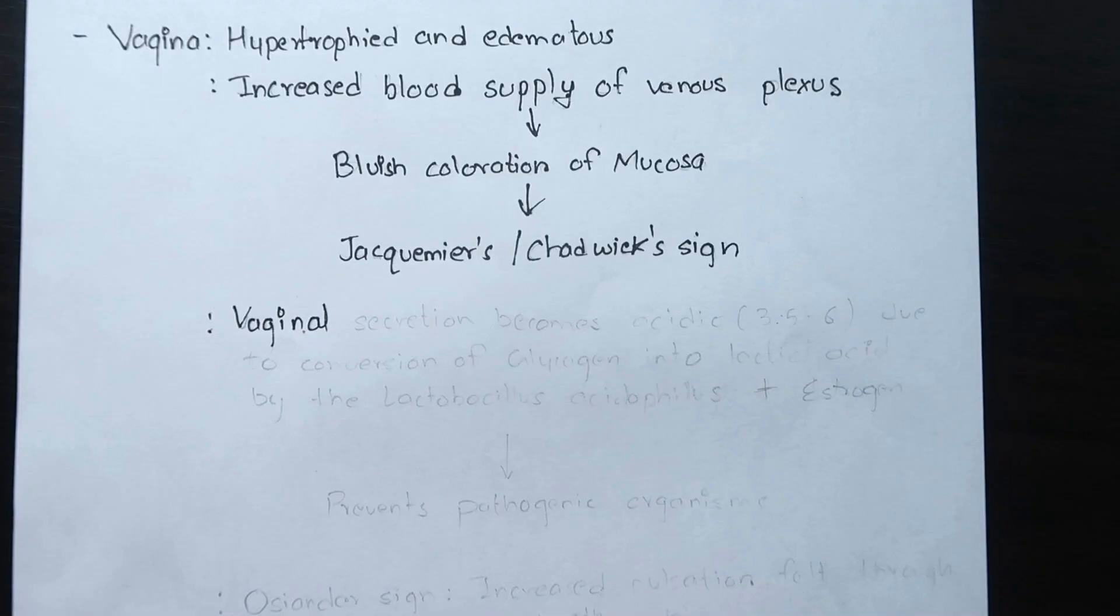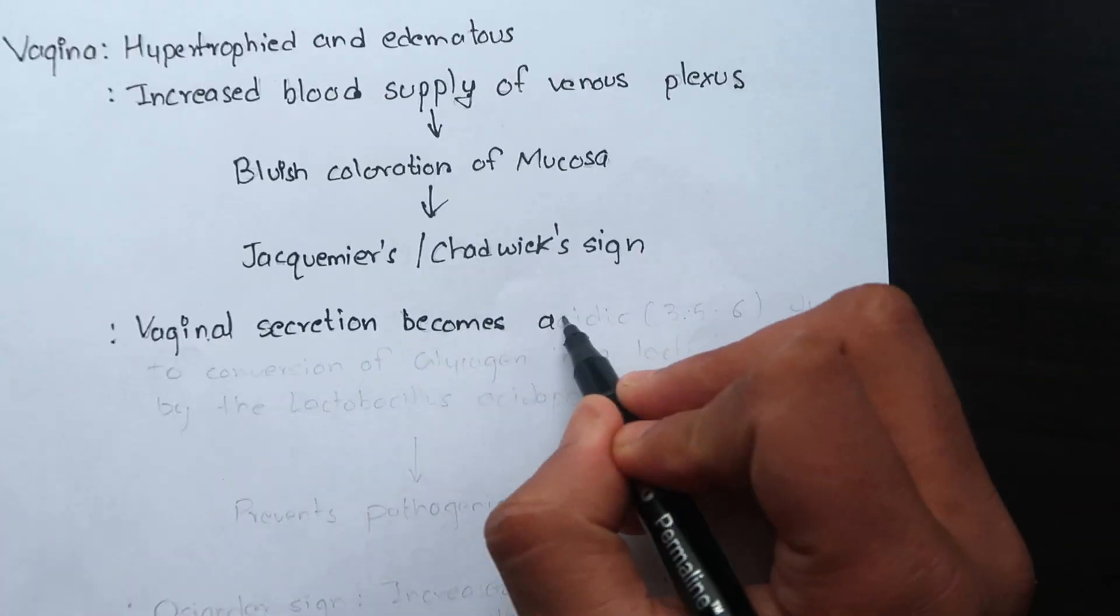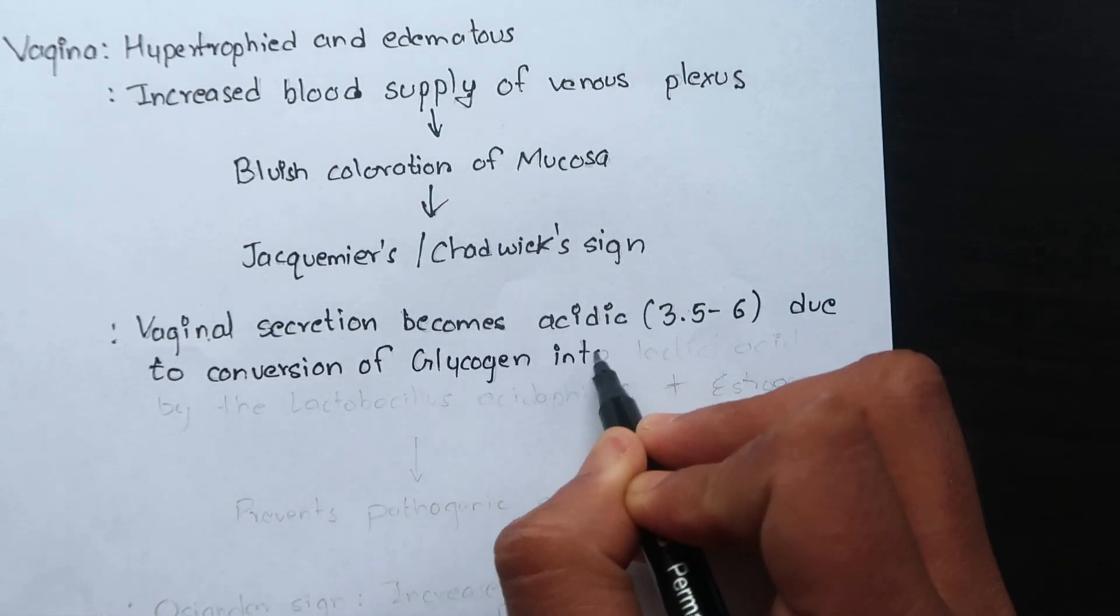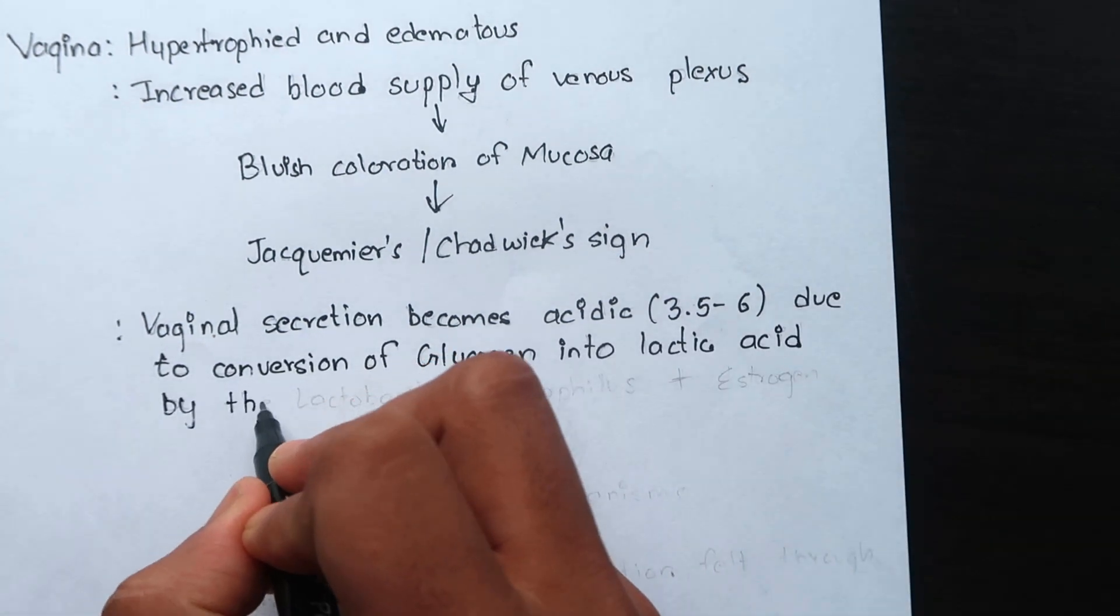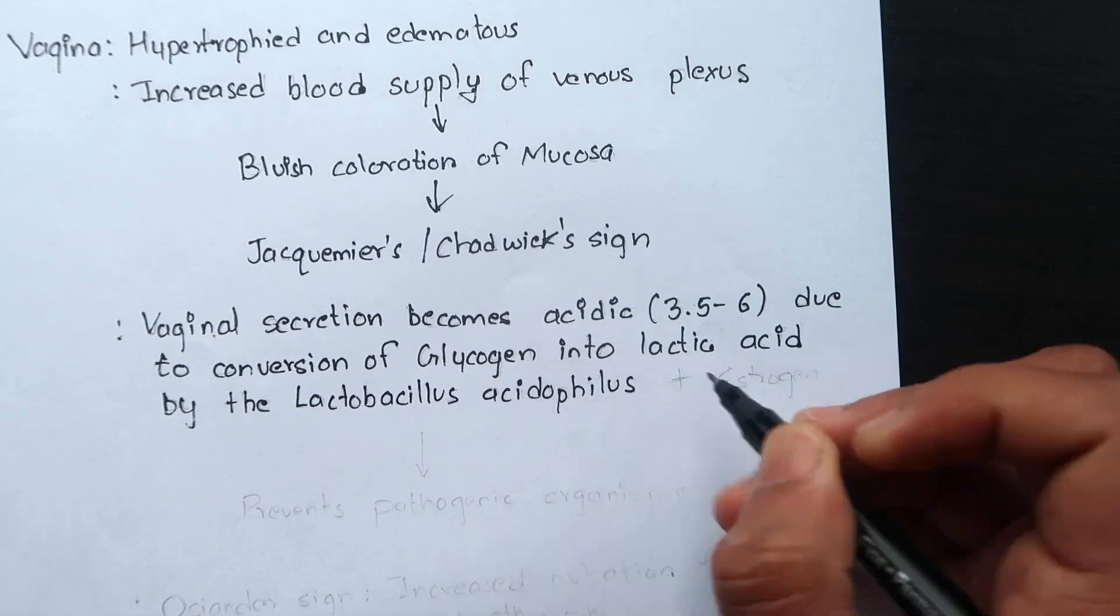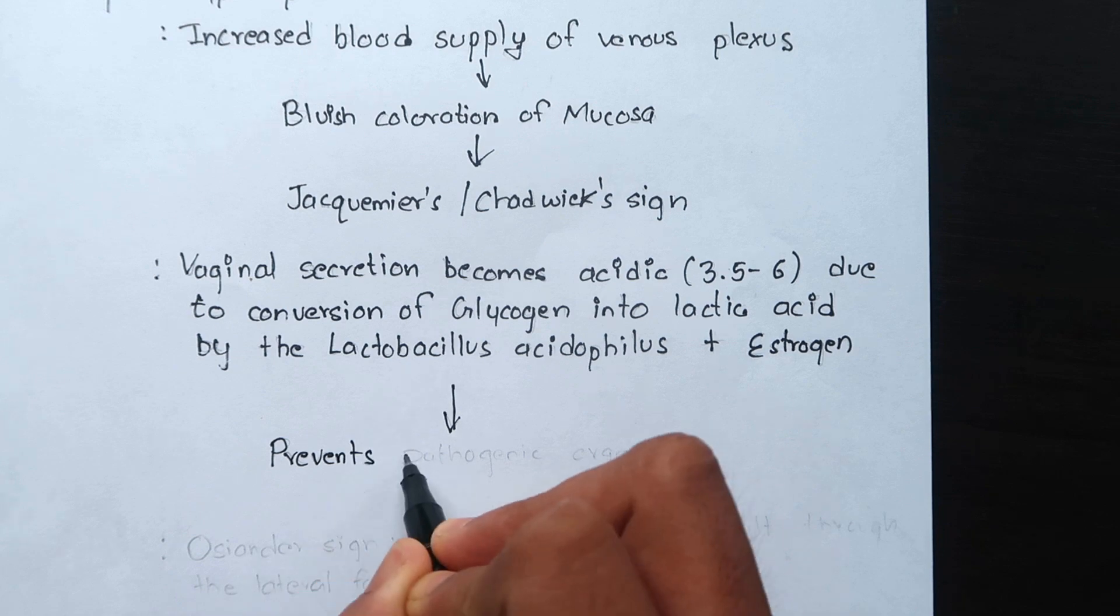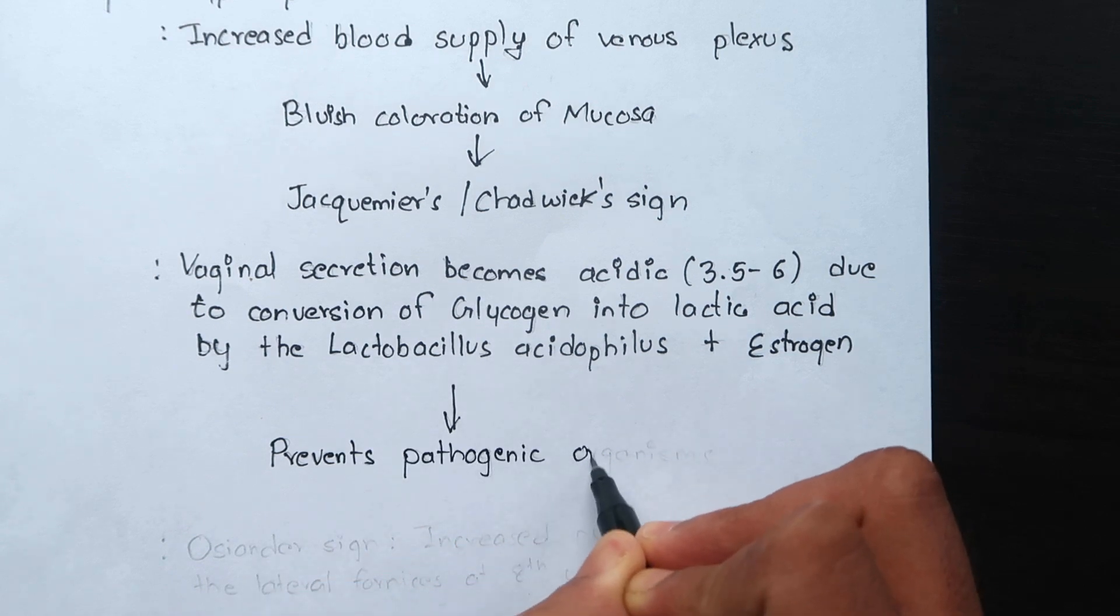pH of the vaginal secretions become acidic due to more conversion of glycogen into lactic acid by the lactobacillus acidophilus consequent on high estrogen level. The acidic pH prevents multiplication of pathogenic organisms.